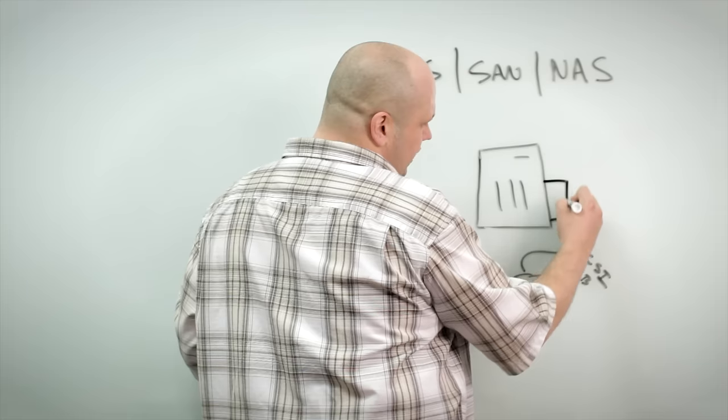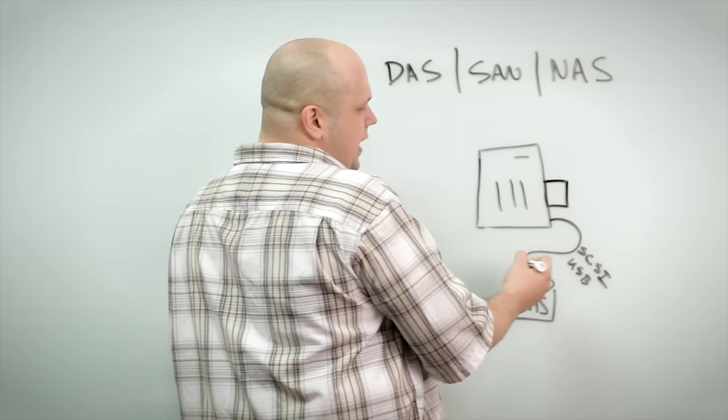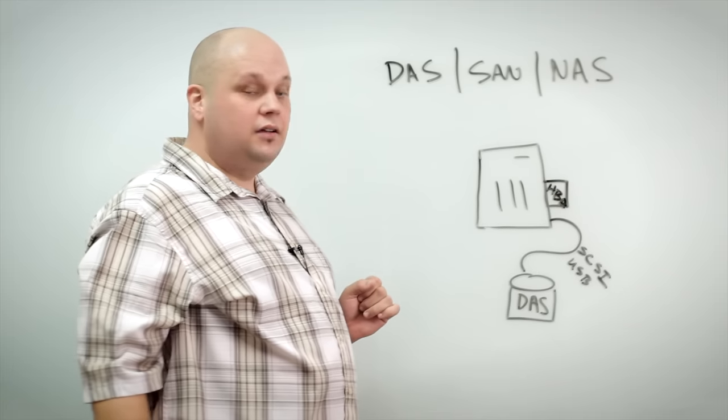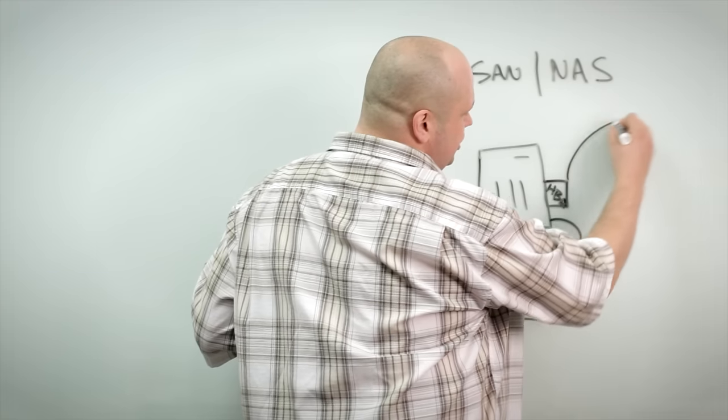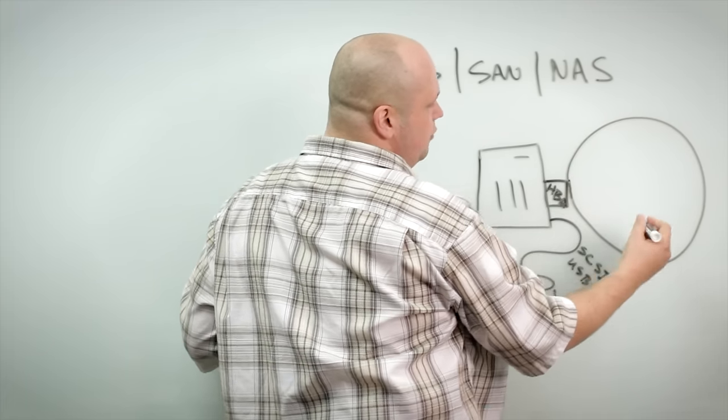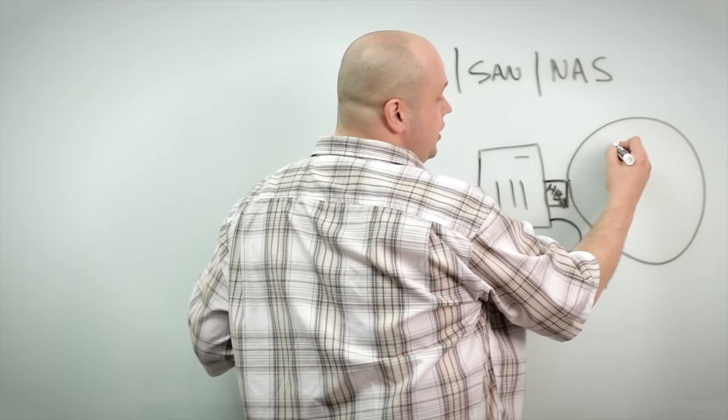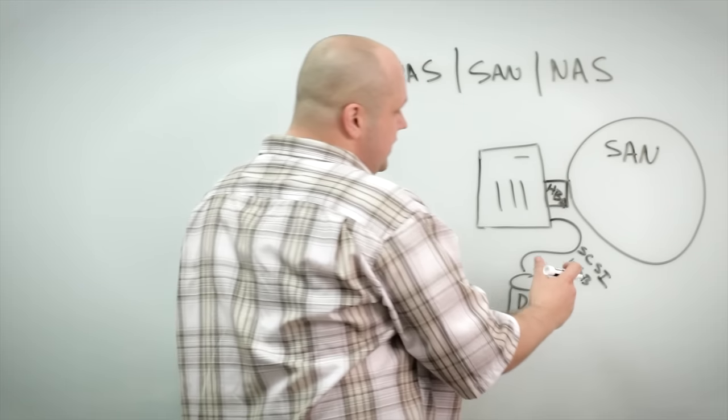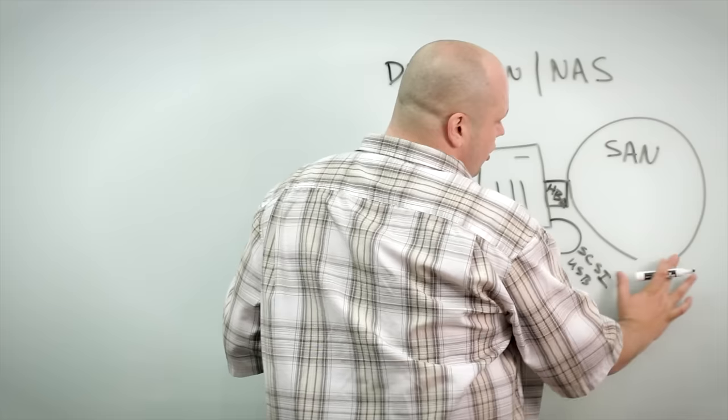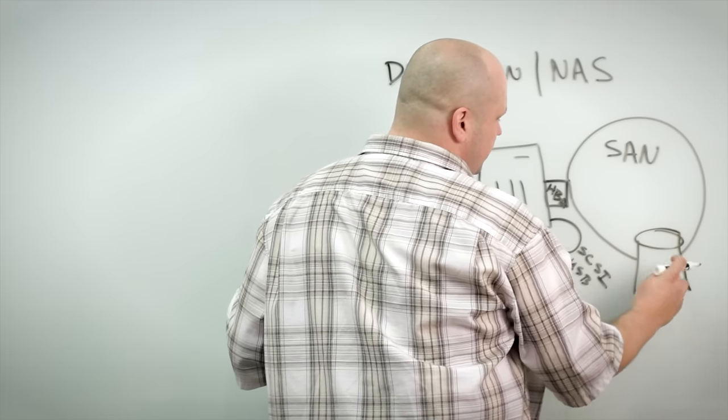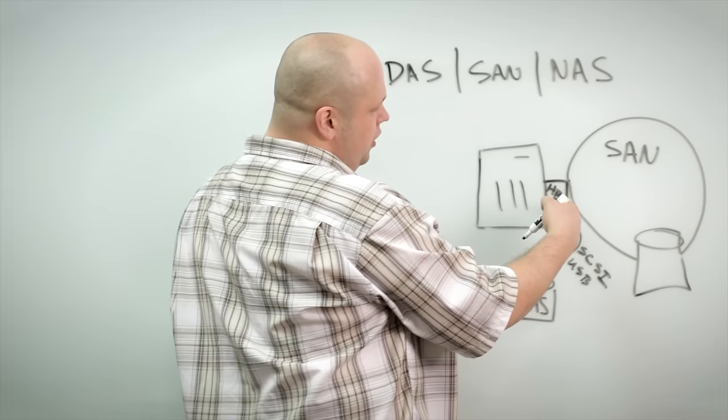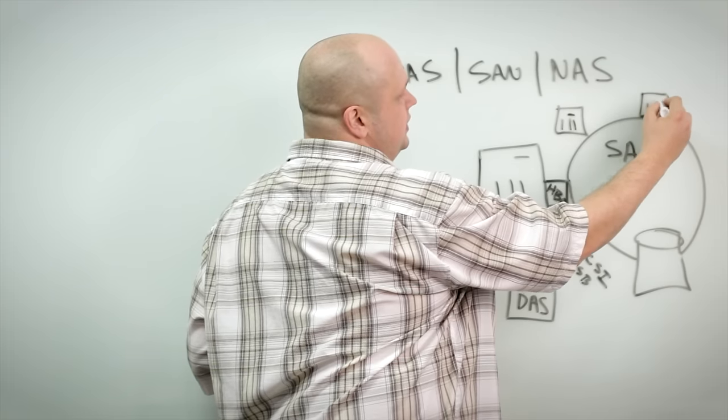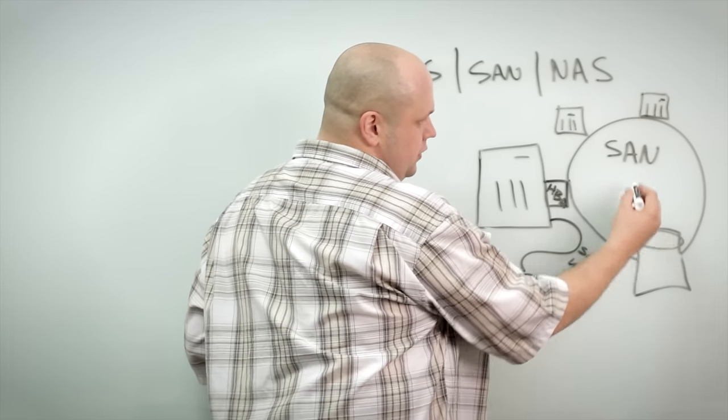What they did is they plugged in a special adapter onto the server and those adapters are called host bus adapters, HBAs. And then that host bus adapter connected you to a very special network that was dedicated for storage. So we called it a storage area network, a SAN. And on this SAN we would attach some really large and expensive type of storage solution that would allow multiple servers connected to the SAN to access a centralized solution for the storage.